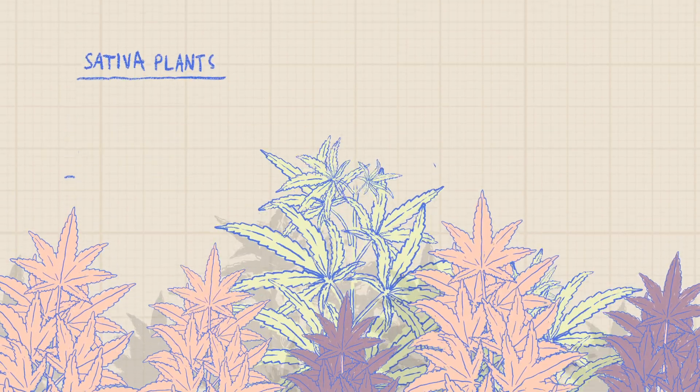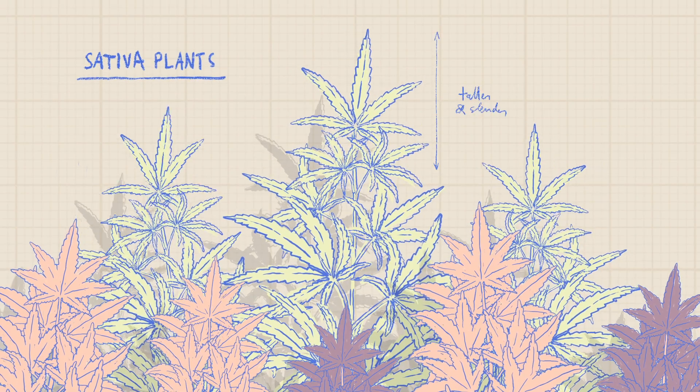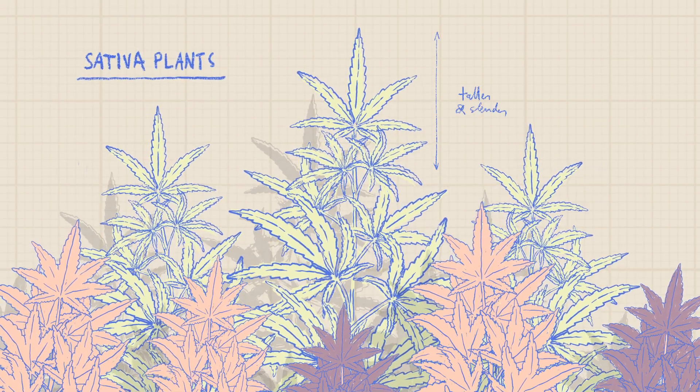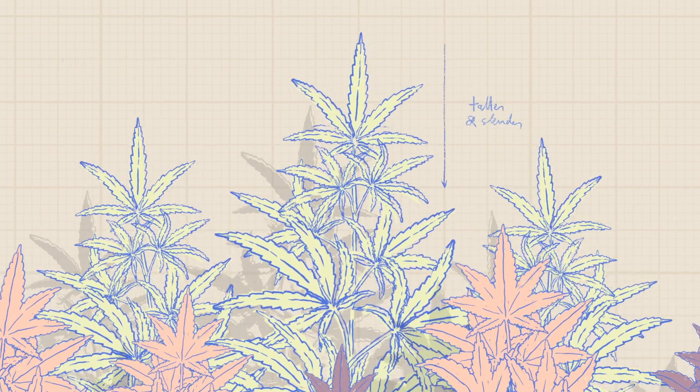Sativa plants, by contrast, are taller and have less foliage, and their leaves are longer and slenderer. They generally produce a psychoactive and stimulating effect.